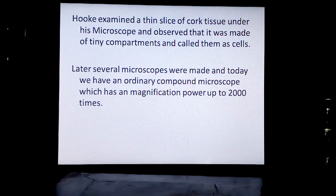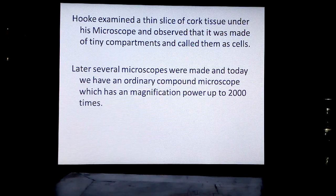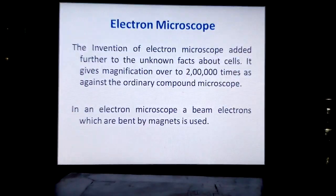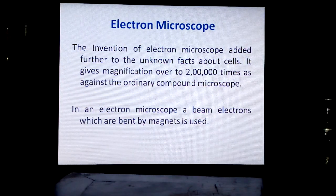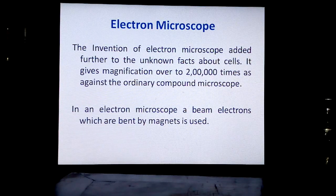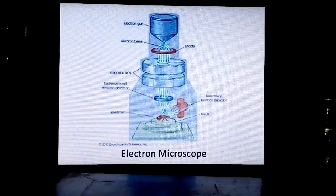Later, several microscopes were made, and today we have an ordinary compound microscope with a magnification power of up to 2000 times. The electron microscope was then invented, adding further to unknown facts about cells. It gives magnification over 2 lakh times, as against the ordinary compound microscope's 2000 times. In an electron microscope, a beam of electrons bent by magnets is used.